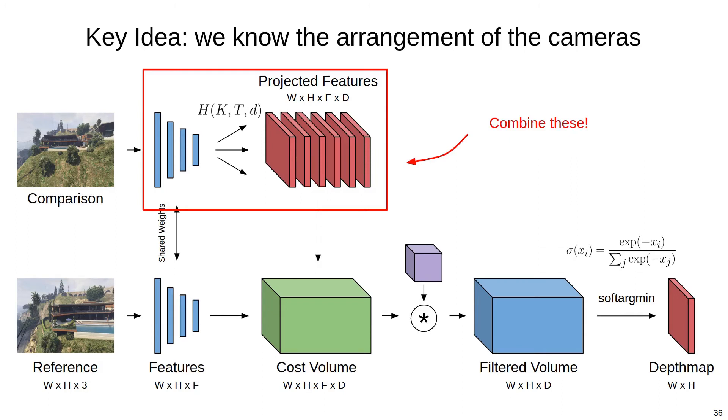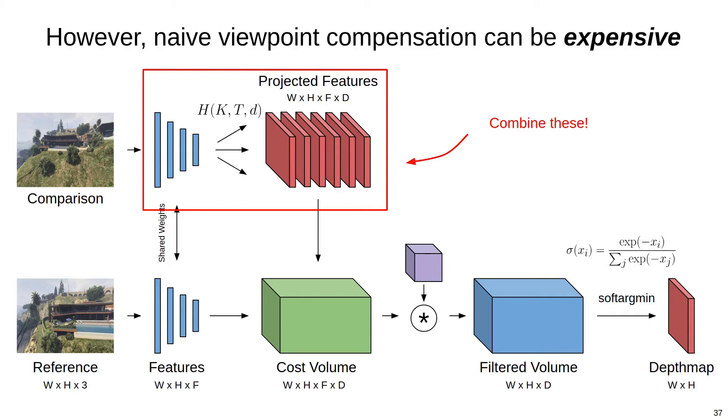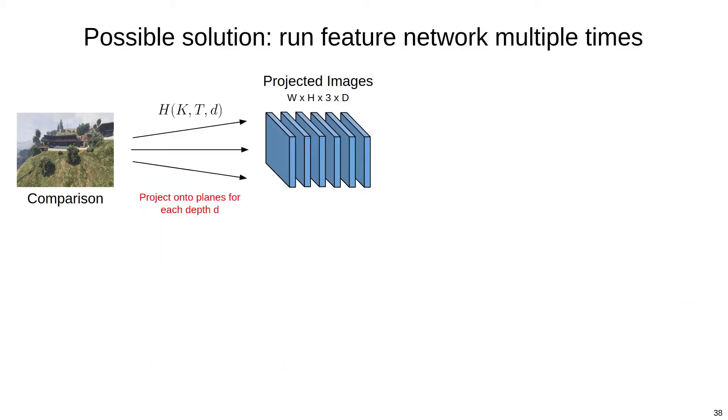Our key idea for this problem is that we actually know the arrangement of the cameras and therefore can compensate for these known viewpoint changes directly in the feature extraction layers, generating features that are projected onto the set of planes by construction. However, doing this compensation naively can be computationally expensive.